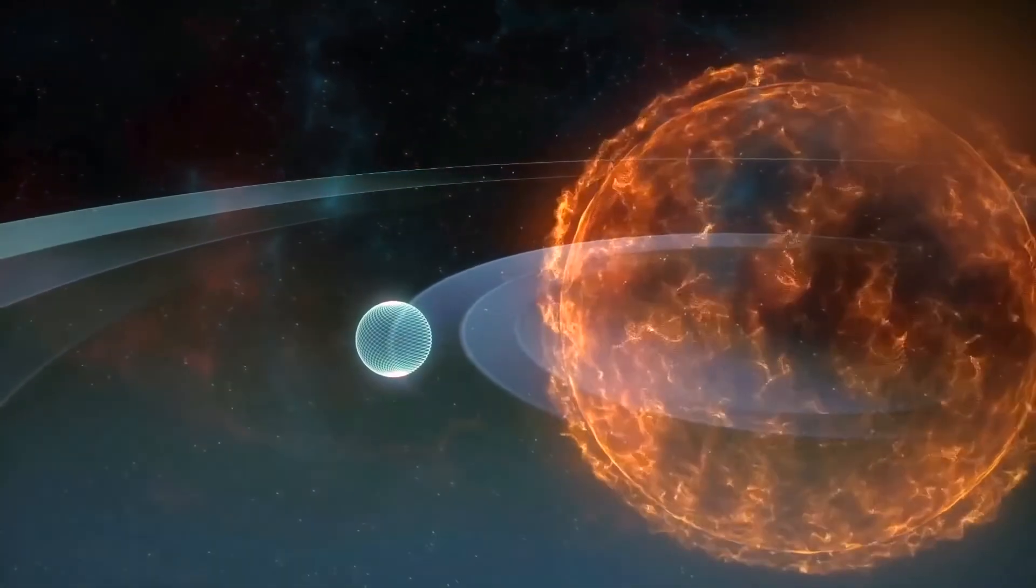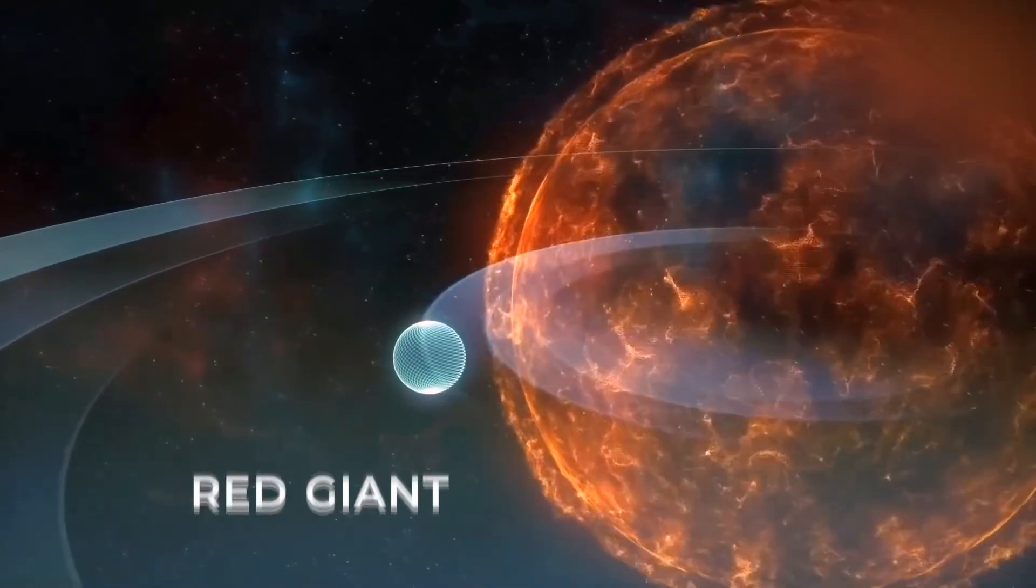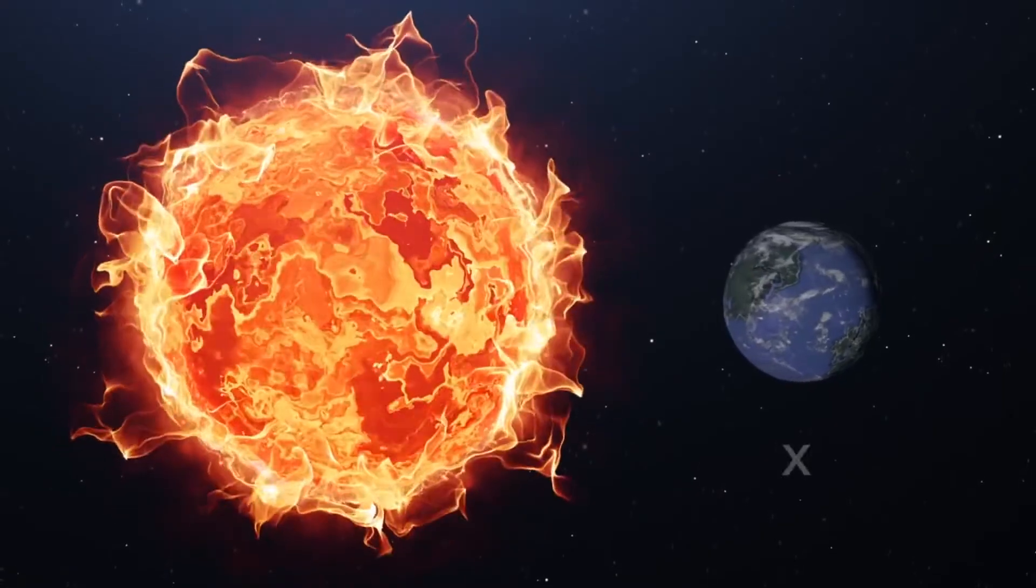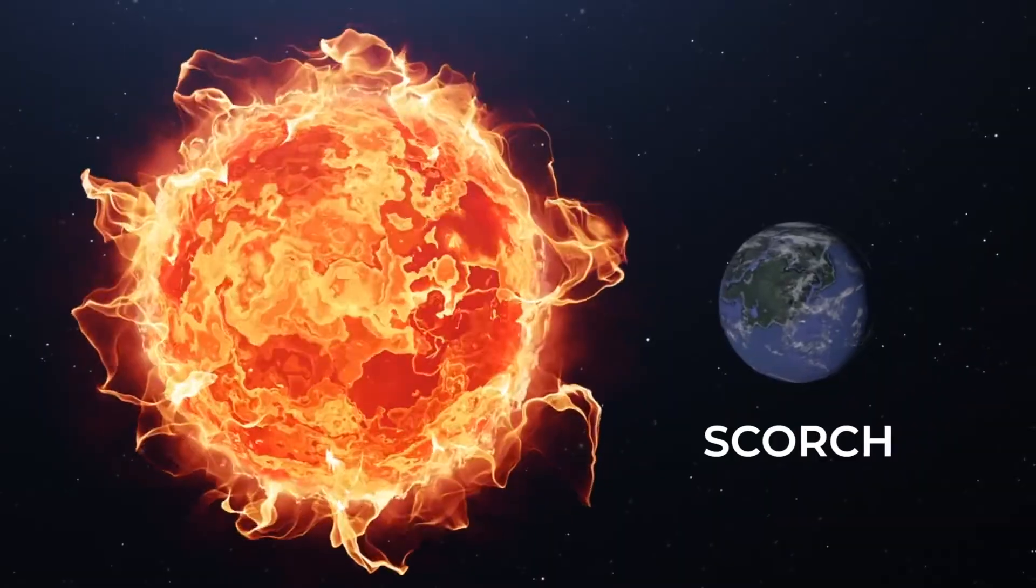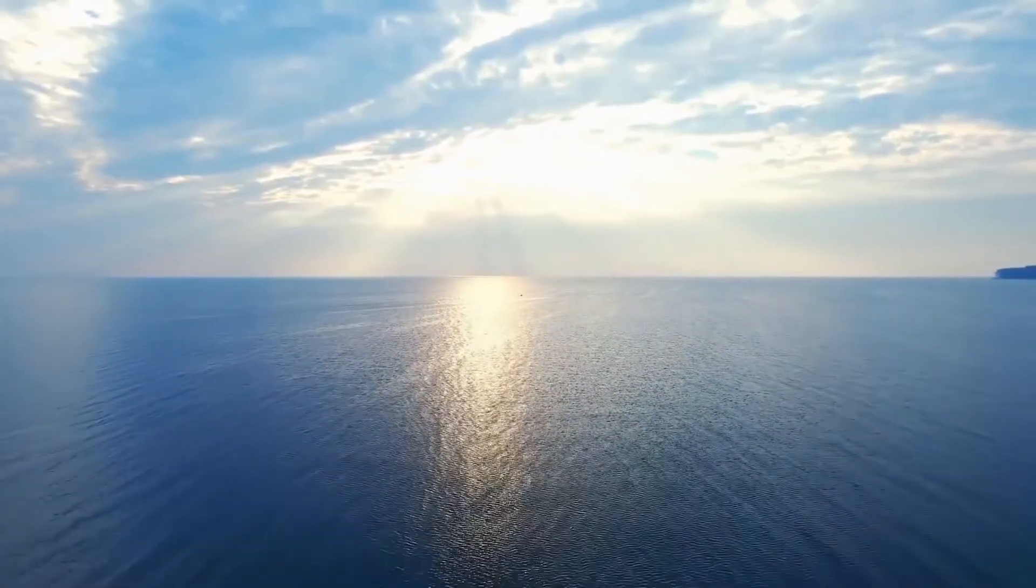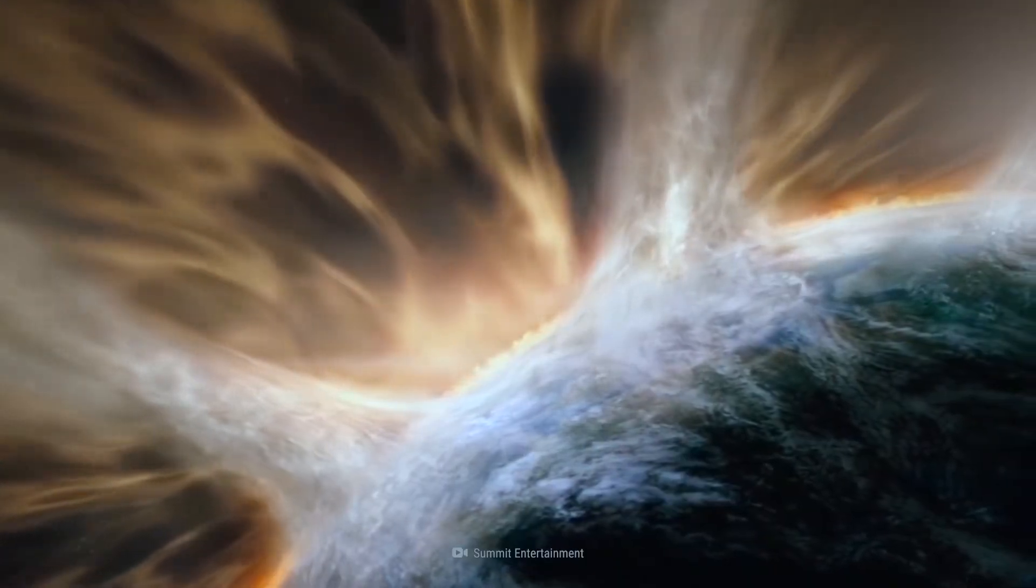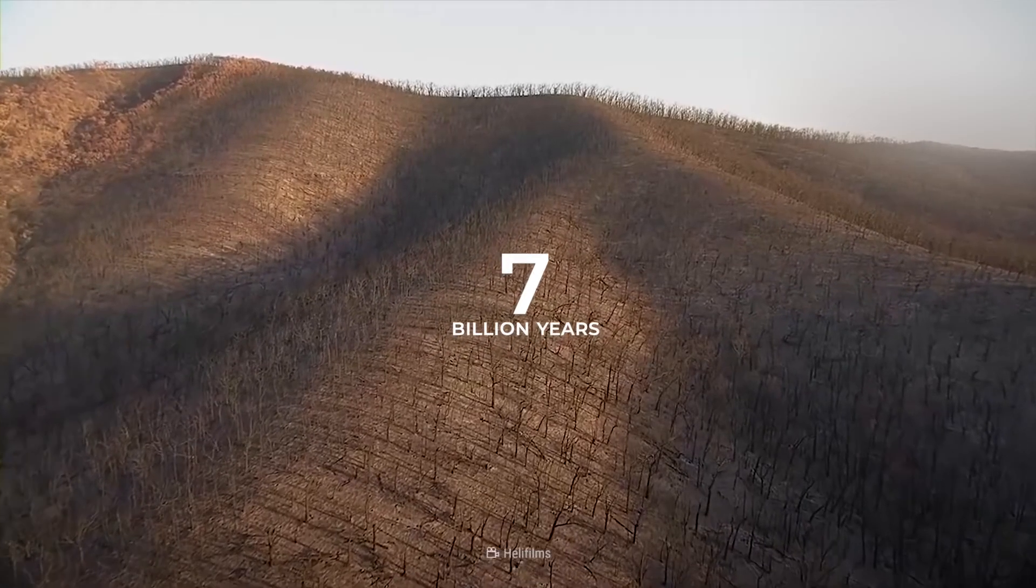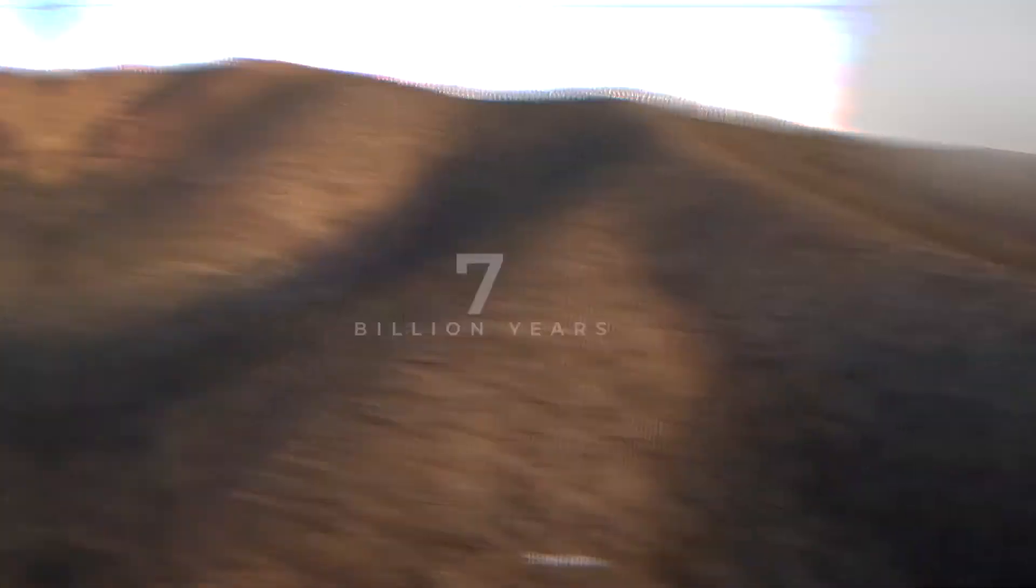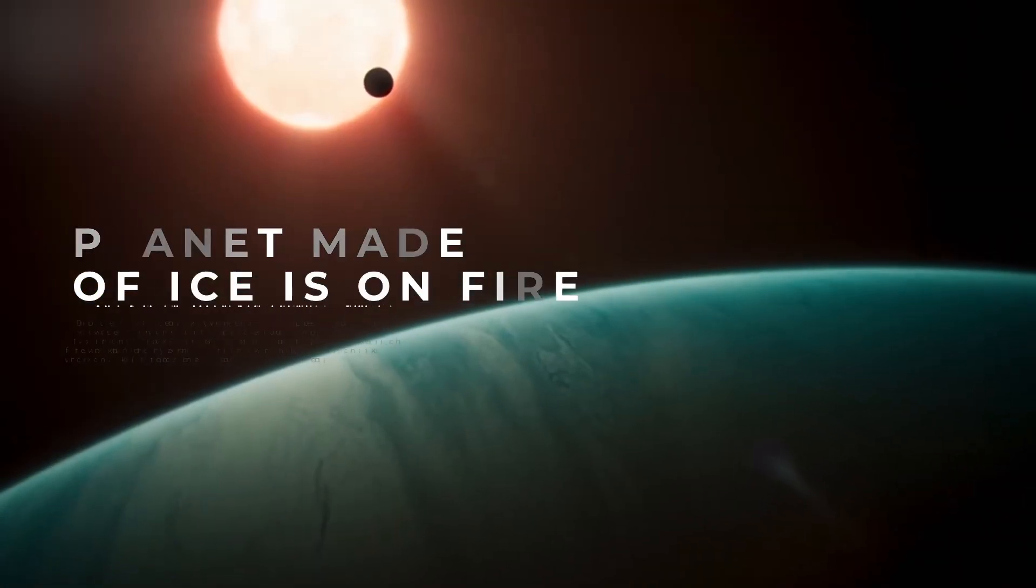When our Sun begins to die, it will begin to slowly expand out until it becomes a red giant. When it expands, it will get close enough to Earth that it will scorch the Earth, evaporating all of our surface water and killing much of the life here. It may even get so big that it engulfs the Earth as it expands. But don't worry, this is not going to happen for at least another 7 billion years, so we have time to make a plan for our escape.